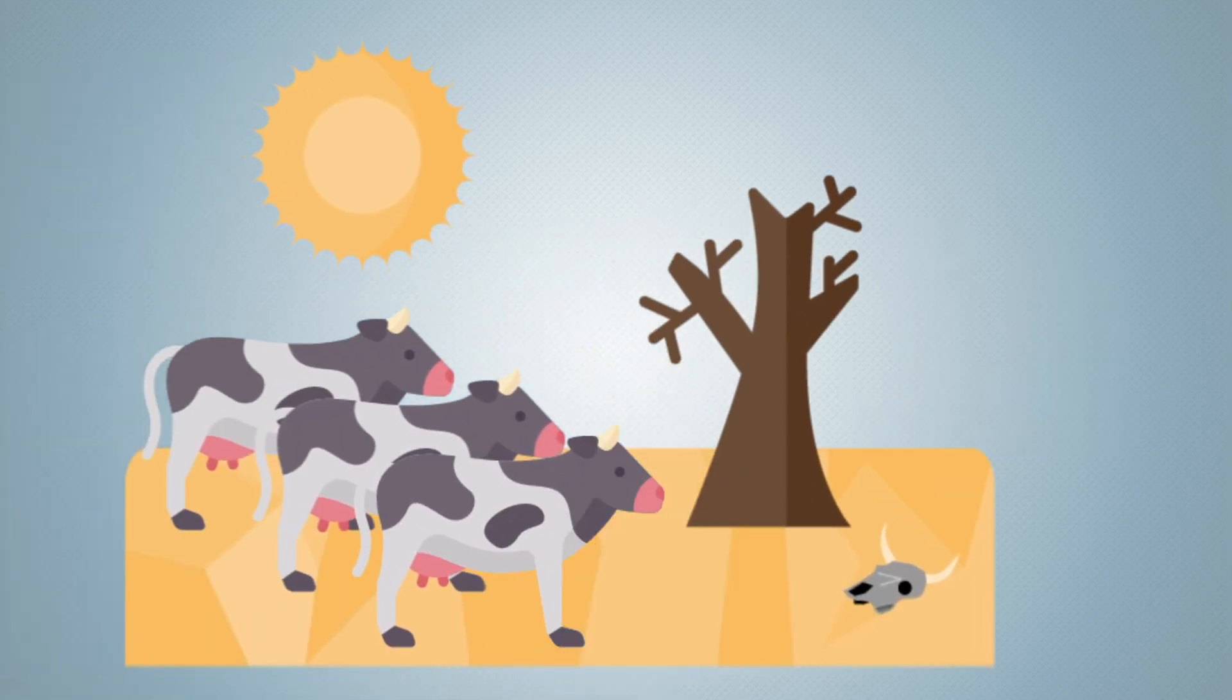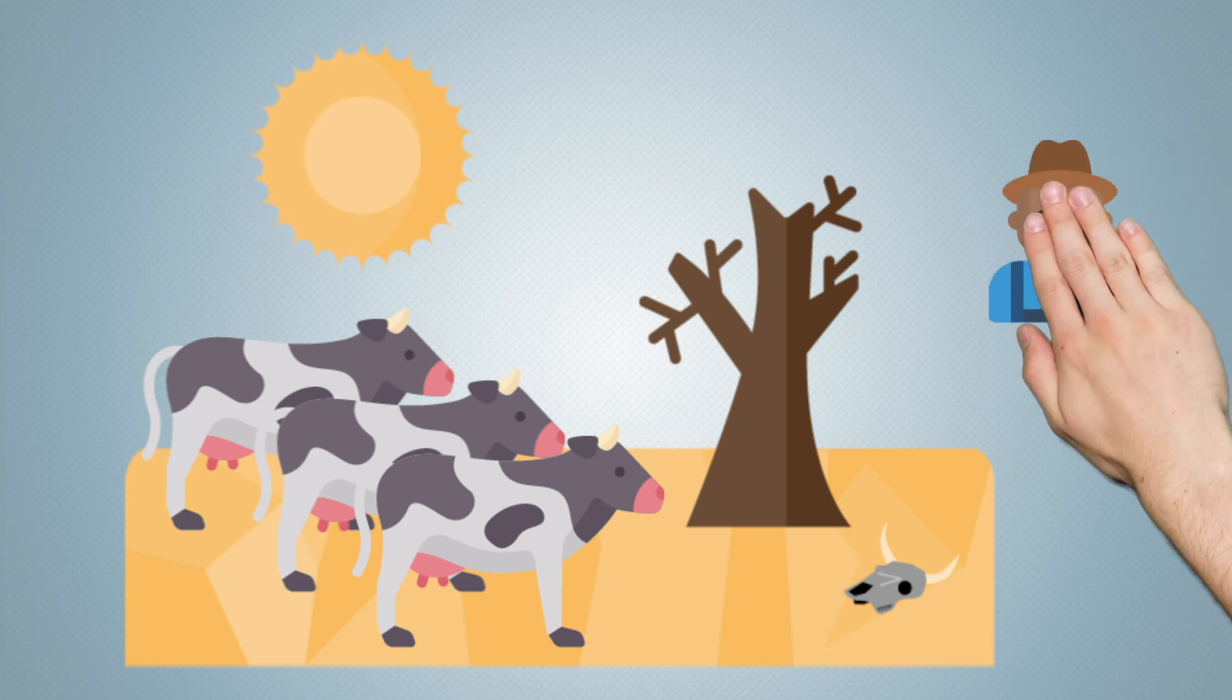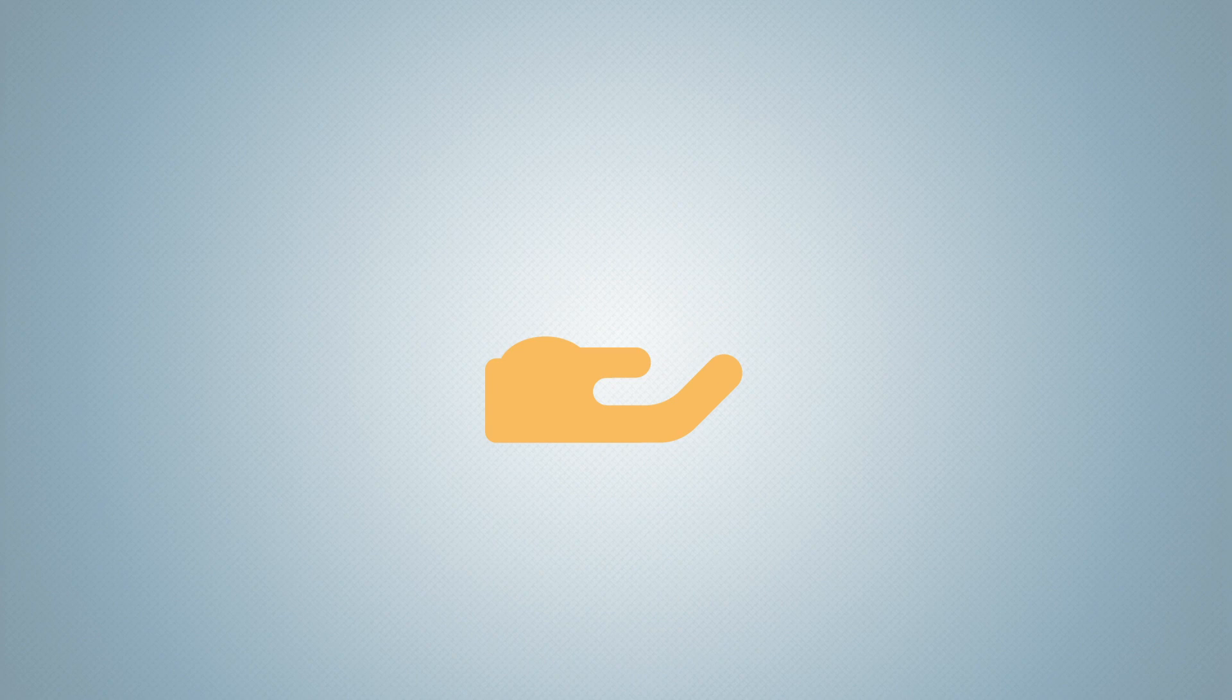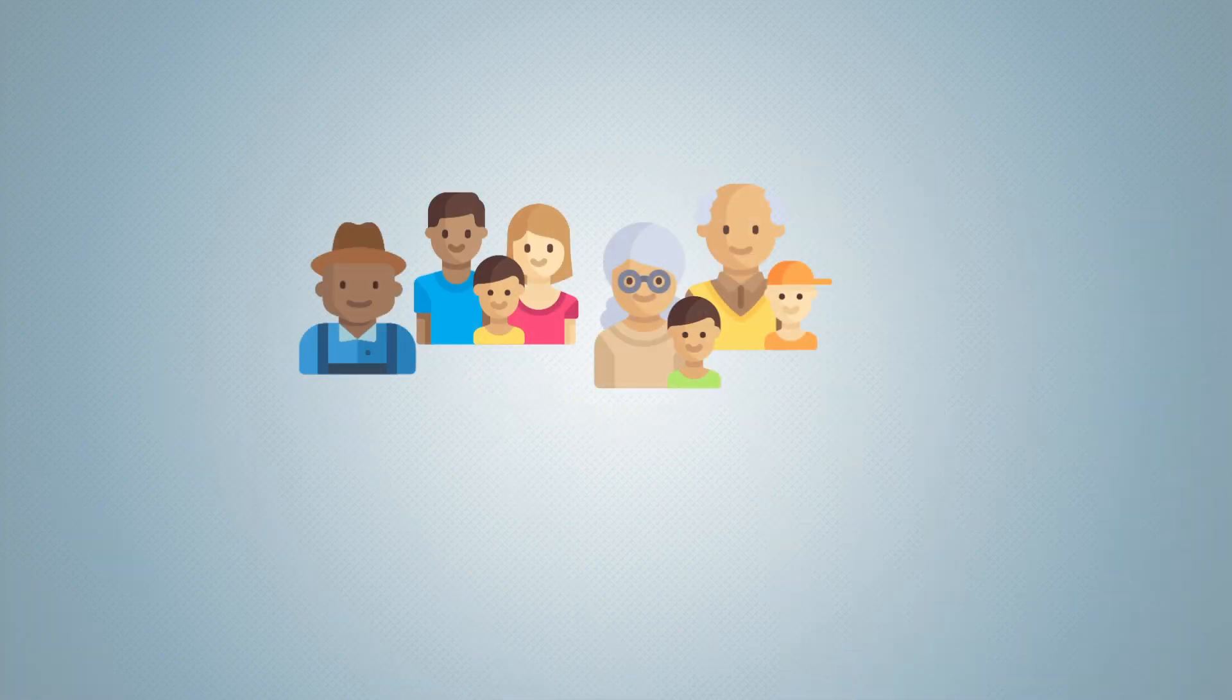Let's take an example. Due to persistent drought, pasture for grazing animals becomes scarce. Livestock farmers can no longer feed their animals and are forced to sell them. As a result, they permanently lose their source of income and thus their livelihood. They are no longer able to care for themselves and their families.